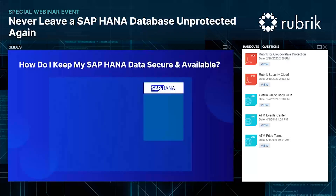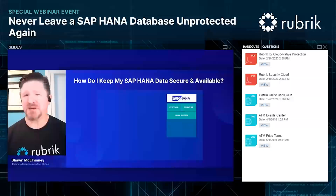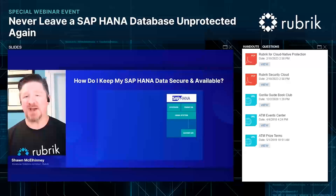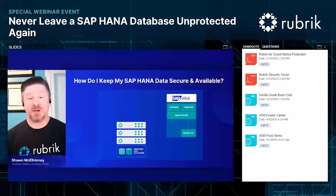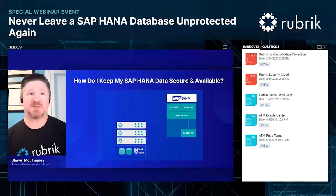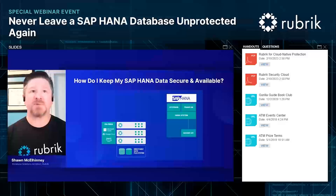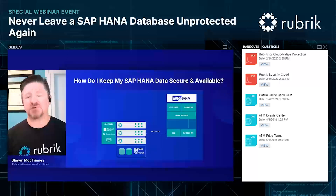SAP HANA has multiple components to protect. It consists of the HANA system and a series of databases — typically the system and the tenant database element. The system will ultimately communicate with the backend API to manage backup activities. This is where Rubrik enters the picture. Our protection starts by deploying the Rubrik appliance, which can be done either within one of your data centers or at one of the three major cloud connectors. We can deploy the Rubrik Backup Service and ensure secure communications between our SAP HANA hosts and Rubrik.